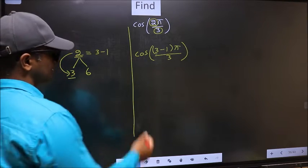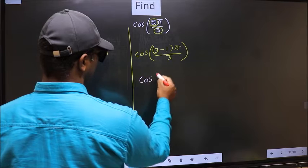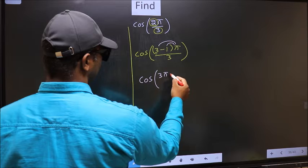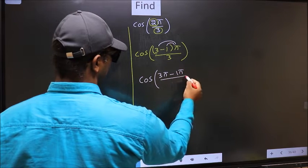Next, cos, now you should open up the brackets. You get 3π minus 1π by 3.